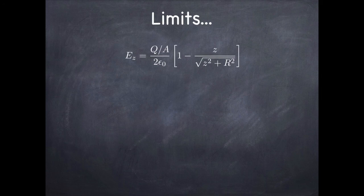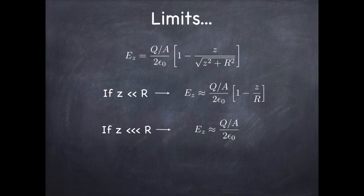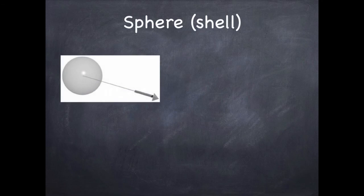The answer looks complicated, but the limits are useful. If z is much less than R, we can ignore z² in the denominator and get a simplified version. If z is much much less than R so that z/R can also be neglected, we get a very simple answer: the electric field is essentially constant and doesn't depend on z at all. On the other end, if z is much greater than R, the expression reduces to the point charge formula — you'll need the power-law approximation (1+x)ⁿ ≈ 1+nx for small x to work that limit out.